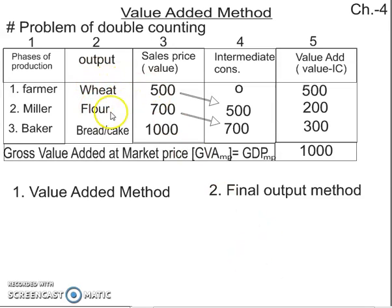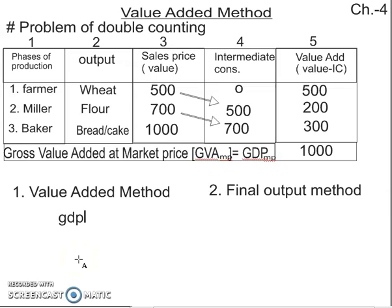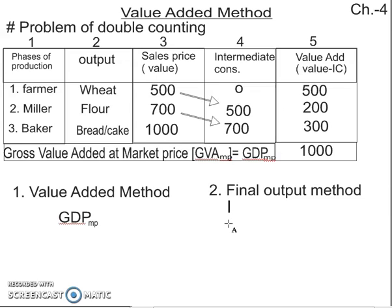We leave intermediate products and take only final products — like the value of the cake. That is our final output method. From GDP at market price, we convert to national income, which is NNP at factor cost.